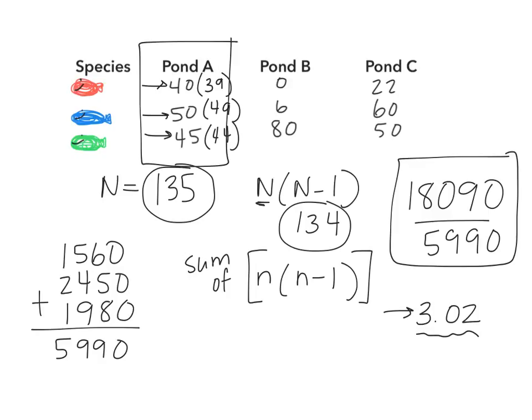But if you'd calculate the biodiversity of B and also the biodiversity of C, then you could compare those three ecosystems and see which has the highest biodiversity and which has the lowest biodiversity. So that's what I'm going to ask you to do on your own. For pond B and pond C, follow these same steps, calculate the final biodiversity value, and we'll talk about the comparisons in class.